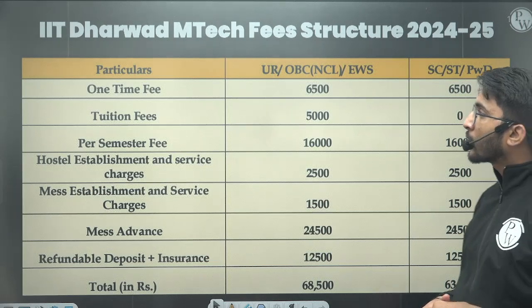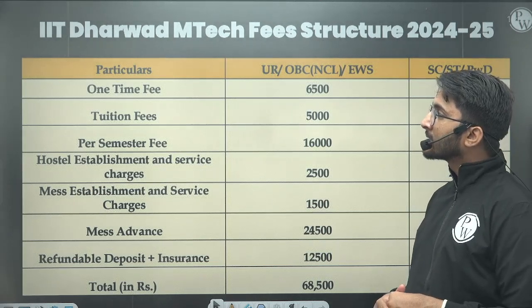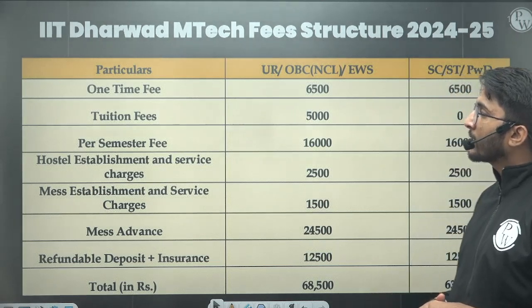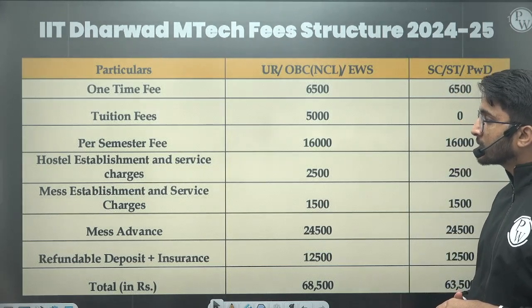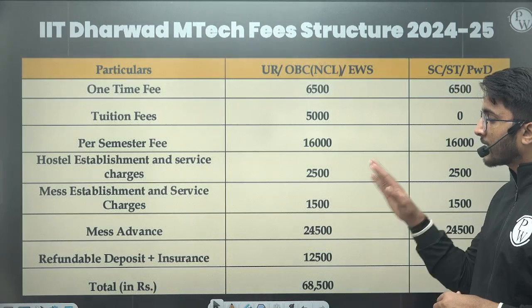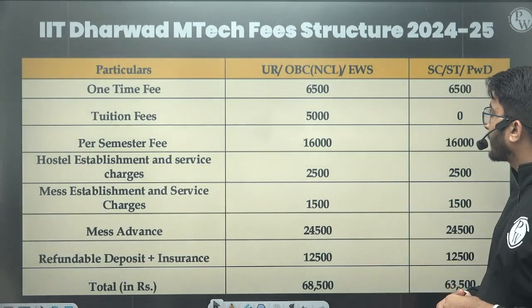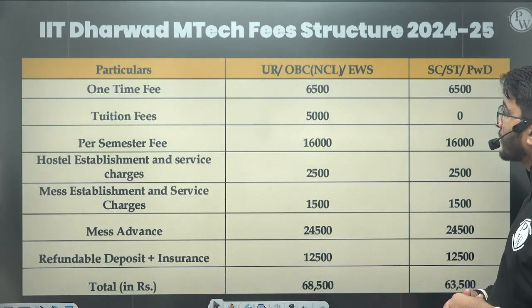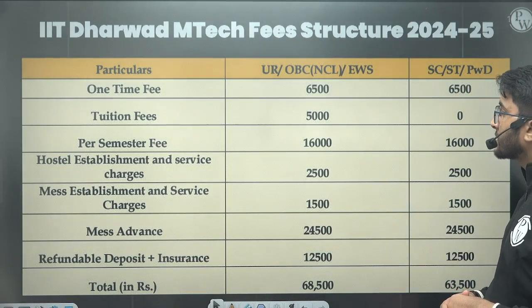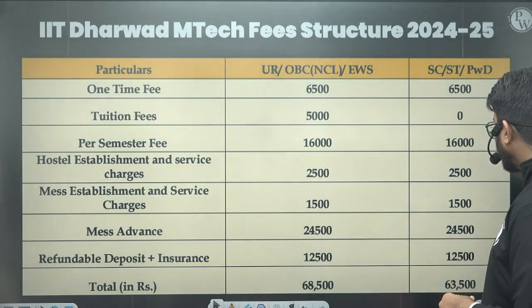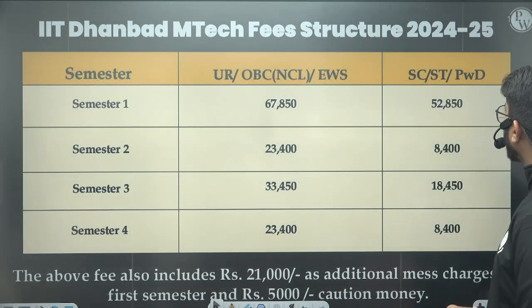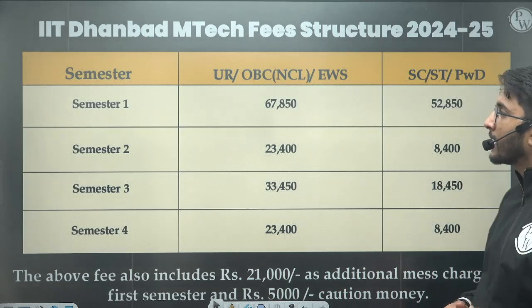For the next IIT, you can see the one-time fees plus tuition fees plus per semester fees — all charges are there. The total is ₹68,500 for General, OBC-NCL, and EWS, and ₹63,500 for SC, ST, and PWD category.